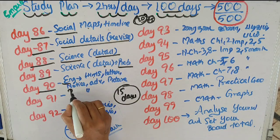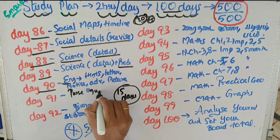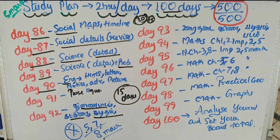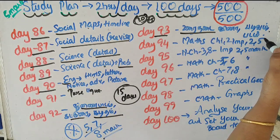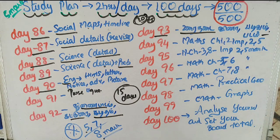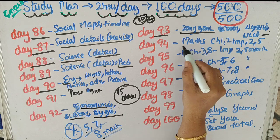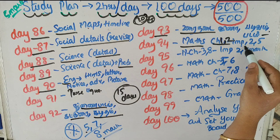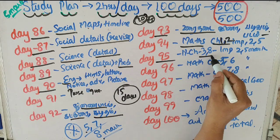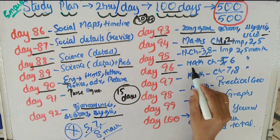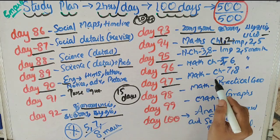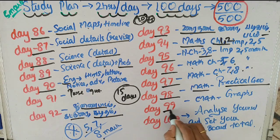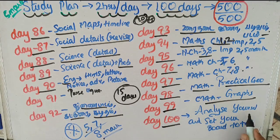Day 91: 5 to 8 marks in English. Day 92: 5 to 8 marks. Day 93: 1 to 8 marks. Day 94: Chapters 1 and 2 - important 1-mark and 5-mark. Day 95: Chapters 3 and 8 - important 2-mark and 5-mark. Day 96: Chapters 5 and 6 - important 2-mark and 5-mark. Day 97: Chapters 7 and 8 - important 2-mark and 5-mark. Day 98: Practical geometry. Day 99: Graphs.